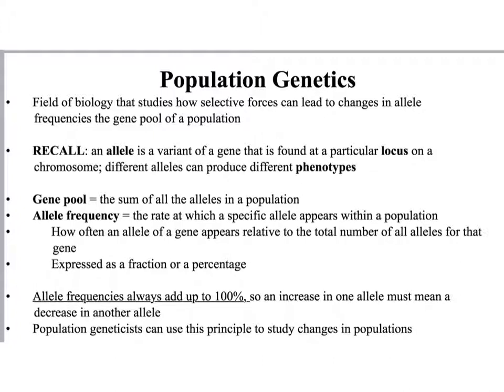An allele is a variant of a gene found at a particular locus on a chromosome, and different alleles can produce different phenotypes. In our example, we're going to be using eye color. We're going to assume that an allele for brown eye color produces brown eyes and an allele for blue eye color produces blue eyes.